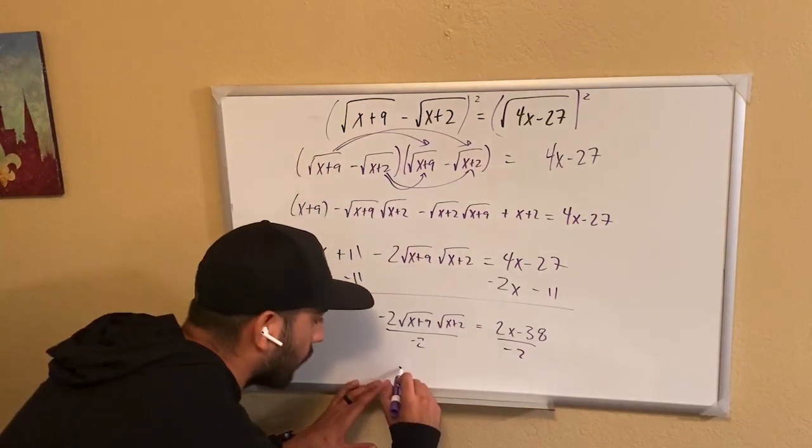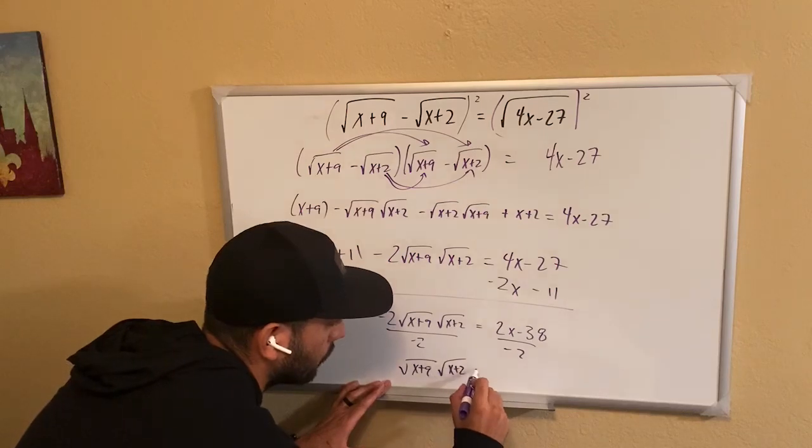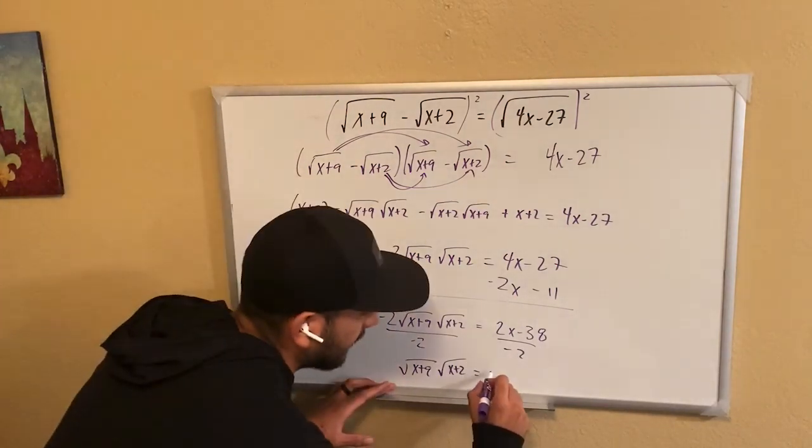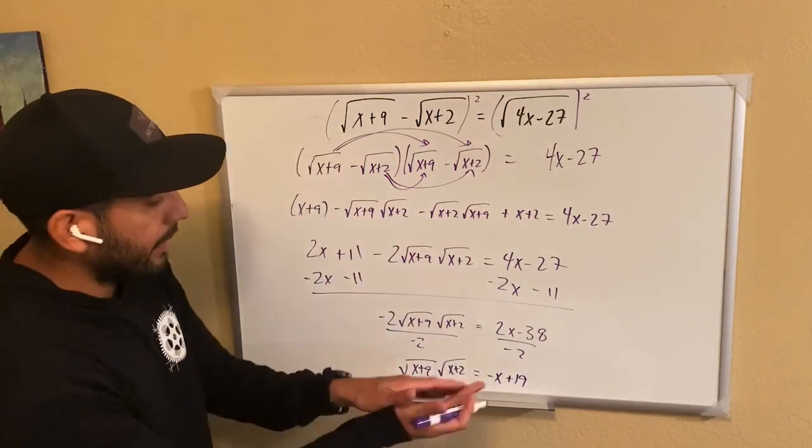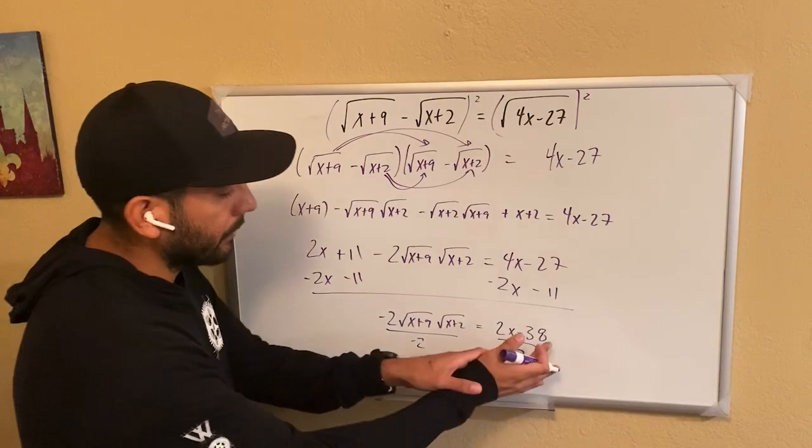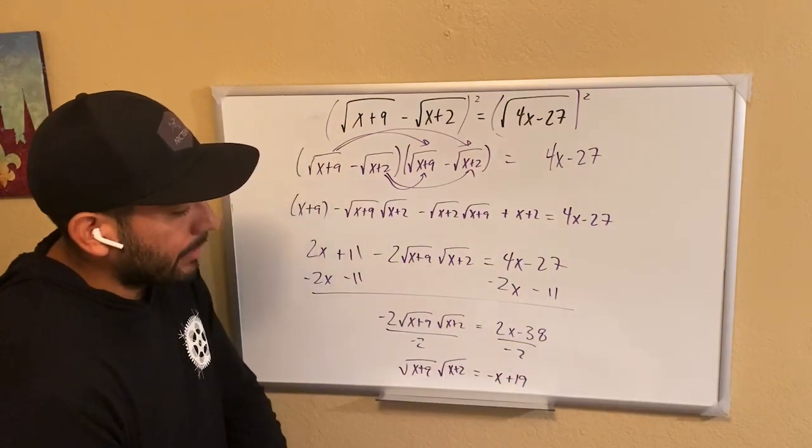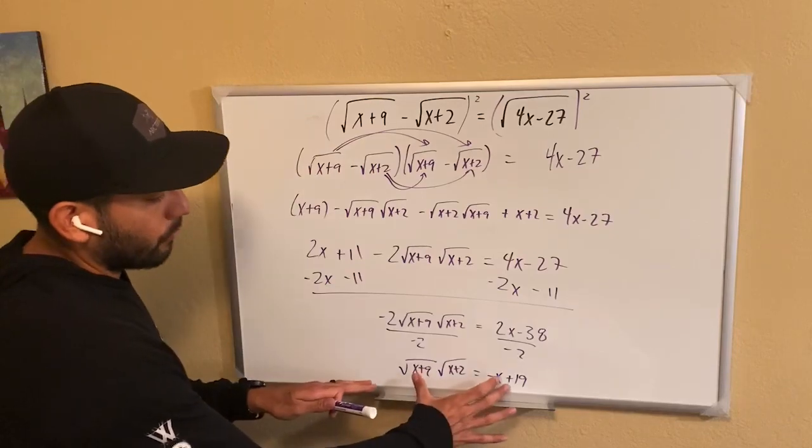So I'm left with root x plus 9 times root x plus 2 is equal to negative x plus 19. Now, how did I get that? I divided 2x by negative 2, which gave me negative x, and negative 38 divided by negative 2, which gave me positive 19.